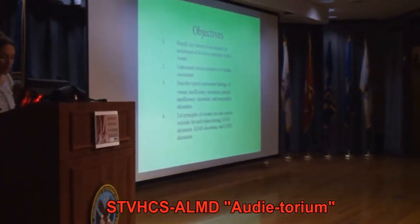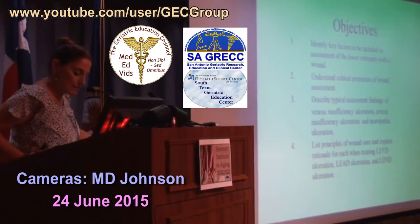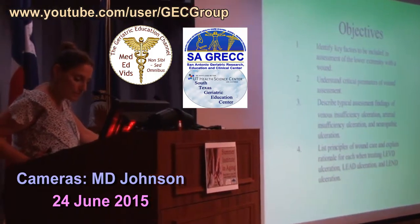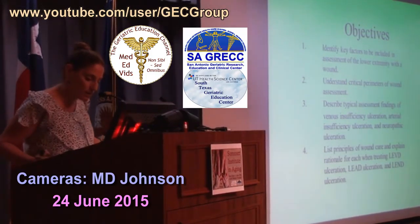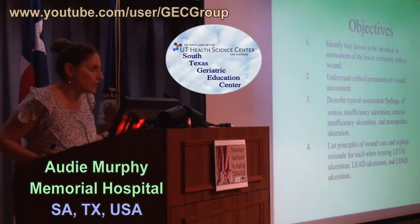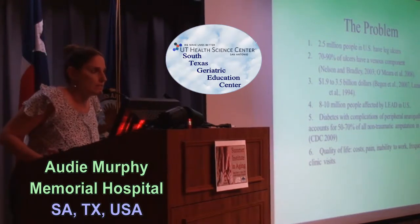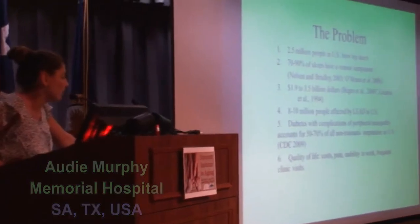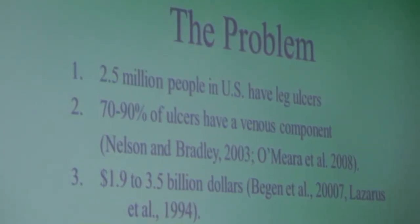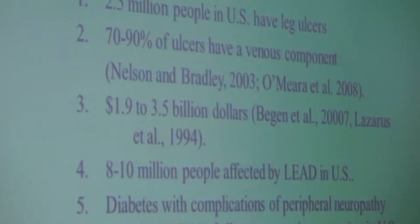Our objectives: identify key factors in assessment of the lower extremity wound, understand critical parameters of wound assessment, describe typical assessment findings of venous insufficiency, arterial and neuropathic ulcerations, and list principles of wound care and explain rationale for each. As you can see by the numbers, many people are affected with these types of wounds. In our clinic, about 80 to 90% of the wounds we see are due to some venous insufficiency or a wound that has delayed healing because of a venous component.